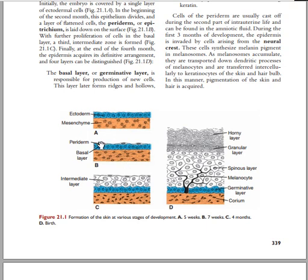In the ectoderm, the skin has the stratum basale, spinosum, granulosum, corneum, and lucidum. The stratum corneum is not present in thin skin while it is present in thick skin. The ectoderm is also going to produce the periderm, which forms the superficial aspect of the epidermis and the basal layer connected to the basal cells.